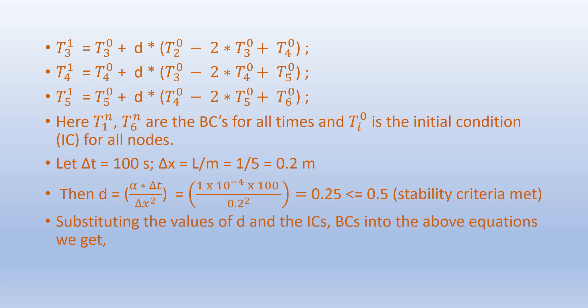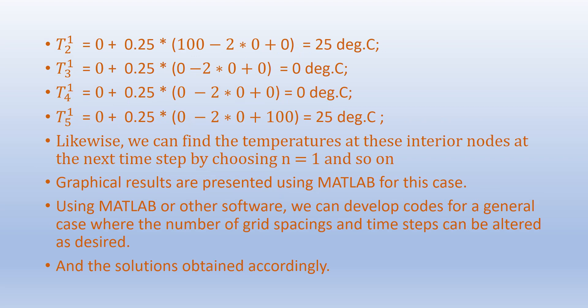Substituting the initial and boundary condition values into the equations, we solve for temperatures at the next time step for all interior nodes. For example, T2 at the next time step equals 25°C, T3 equals 0°C, T4 equals 25°C. We follow the same procedure, setting n = 1, and so on to find temperatures at interior nodes at successive time steps.